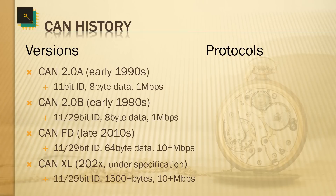Further down the line there is CAN XL — Extra Long — which is currently under specification. The main change from CAN FD to CAN XL is that the data field is even longer. A bit is used that allows CAN FD controllers to ignore the contents, so CAN FD controllers will not destroy CAN XL messages — they will simply ignore them if they can't deal with them.